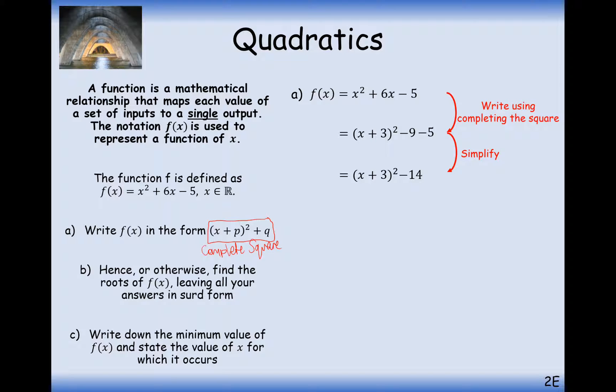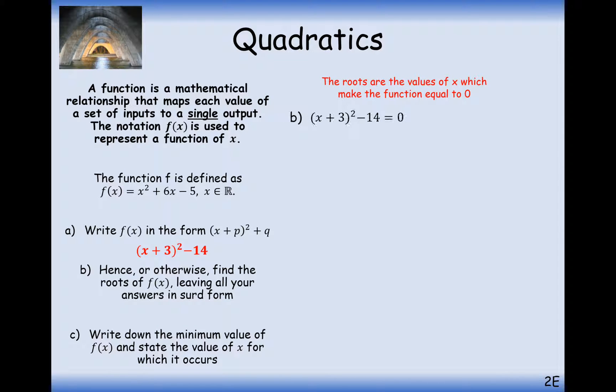Part b, hence or otherwise find the roots of f of x, leaving your answers in surd form. Now it says hence here, so we should be able to continue on from our part a, that's what hence means. So if we want to find the roots of f of x, then what we need to do is we need to set what we had from part a equal to 0 and work out what x needs to be. So add 14 onto the other side, square root, and remember when you square root, you're going to get a positive or negative root 14. Take away the 3 onto the other side, and that's what you get, you get x equals minus 3 plus or minus root 14. So effectively two answers here, one with the plus value and one with the negative value.